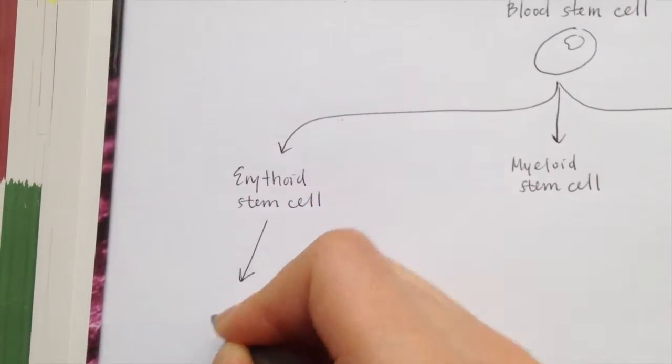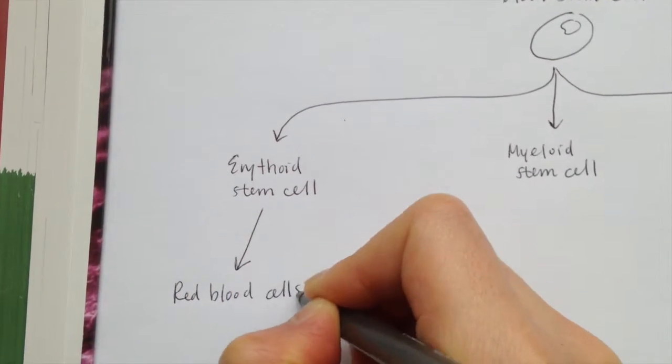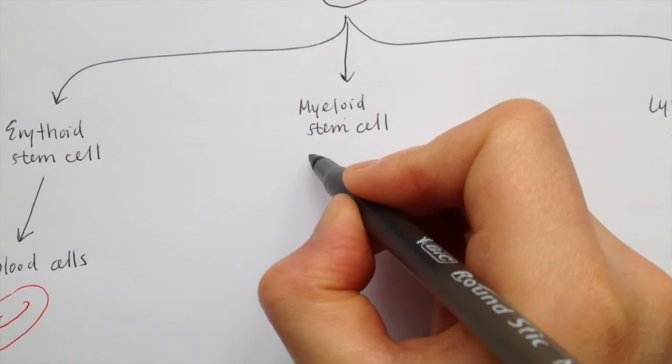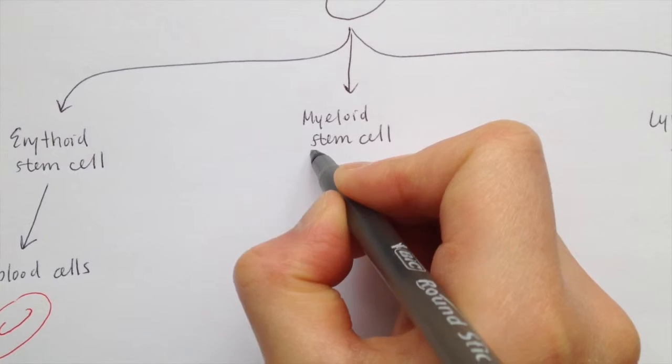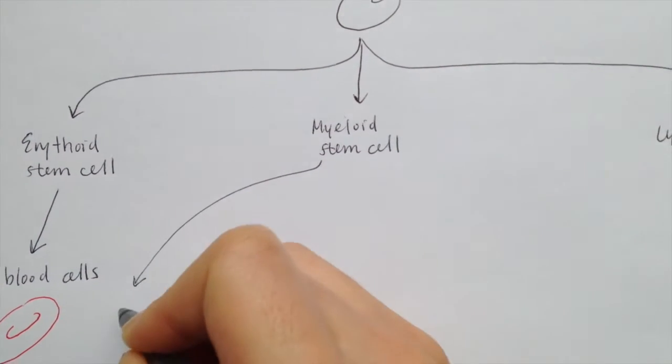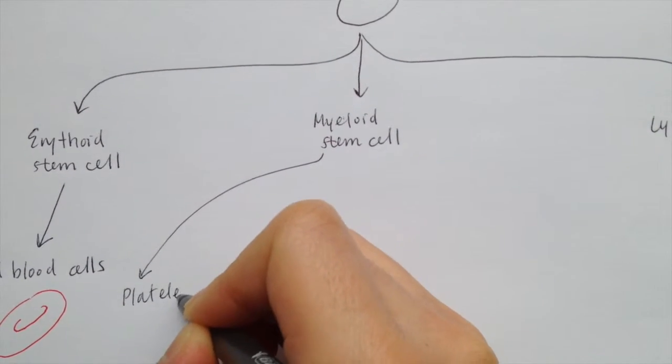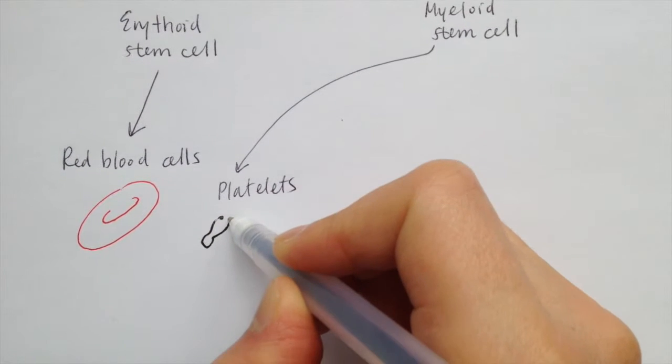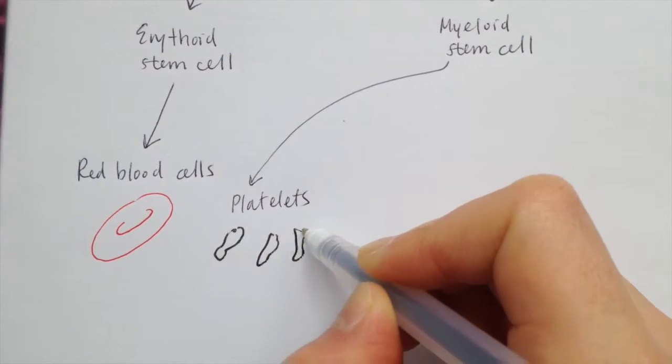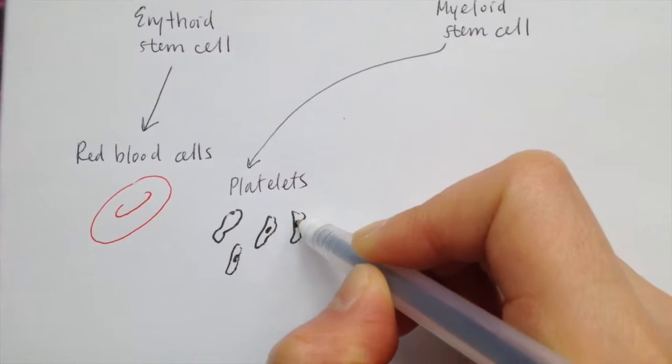From the erythroid stem cell, red blood cells will arise. From the myeloid stem cell, many different other types of immune cells will arise. Platelets, which are involved in blood clotting and inflammation, will arise from the myeloid stem cell.